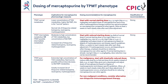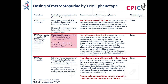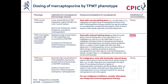These are the CPIC dosing recommendations for mercaptopurine by TPMT phenotype. Patients who are TPMT normal metabolizers will have lower concentrations of thioguanine nucleotide metabolites. These patients are at a normal risk of thiopurine-related myelosuppression and can be given the normal starting dose of mercaptopurine. This is a strong recommendation. Patients who are TPMT intermediate metabolizers or possible intermediate metabolizers will have moderate to high concentrations of thioguanine nucleotide metabolites, are at an increased risk of myelosuppression, and should be started at a reduced dose. This is a strong recommendation.